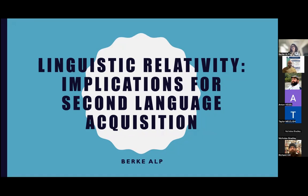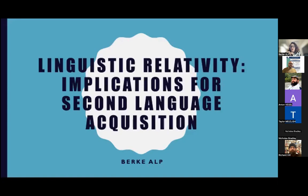Today I want to talk about something that I'm very passionate about: linguistic relativity hypotheses, or Sapir-Whorf or Whorfian hypotheses, and their implications for second language acquisition. Being a polyglot and a language learner pretty much my whole life, I had this personal experience where the more I start to get fluent in a new language, the more I realize certain changes in myself — changes in the way I behave, act, or even perceive certain things. That got me thinking about cognitive changes, and I stumbled upon linguistic relativity theory. I've been reading about it since then and find it quite fascinating.